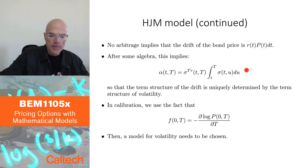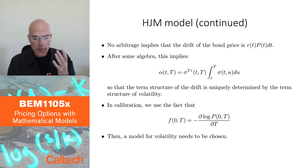So alpha, we don't have a freedom to choose alpha. Once we've chosen sigma, alpha has to be like this. It has to be sigma times integral of sigma.